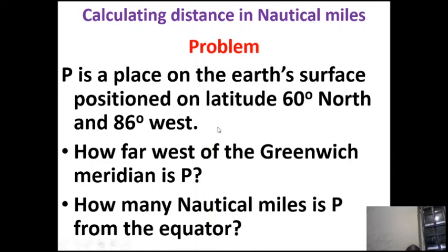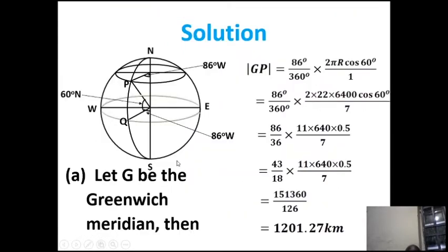Next, we calculate distances in nautical miles. Problem: P is a place on the Earth's surface positioned at latitude 60° North and 86° West. The questions are: how far west of the Greenwich Meridian is P? The Greenwich Meridian is the standard with which to measure the distance of one place from another. Second: how many nautical miles is P from the equator?